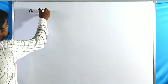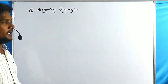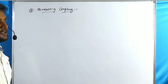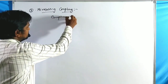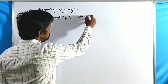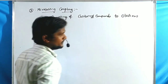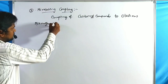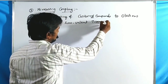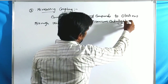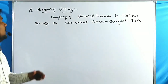The third reaction is McMurray Coupling, which is an example of C=C bond formation reaction. The general definition: McMurray Coupling is the coupling of carbonyl compounds to olefins through a low-valent titanium catalyst — that means a titanium zero (Ti⁰) catalyst. This is called McMurray Coupling.